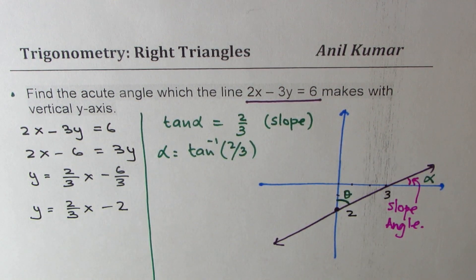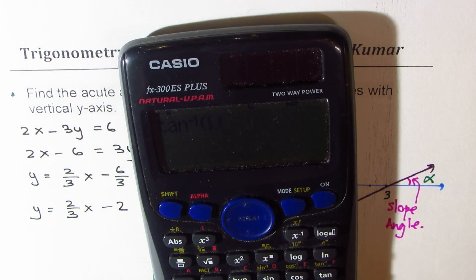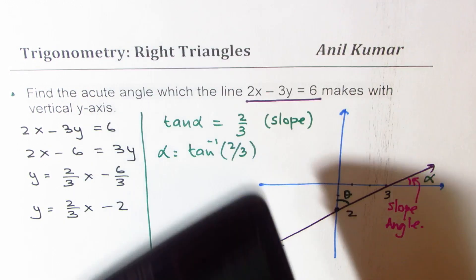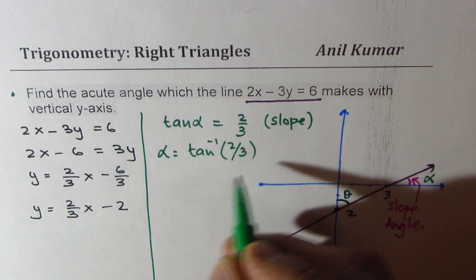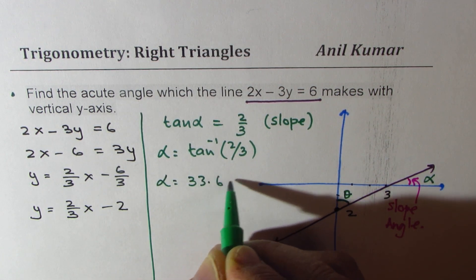Let's use calculator. Find this value. Shift tan inverse 2 divided by 3 equals to 33.69. So we get alpha equals to 33.69.